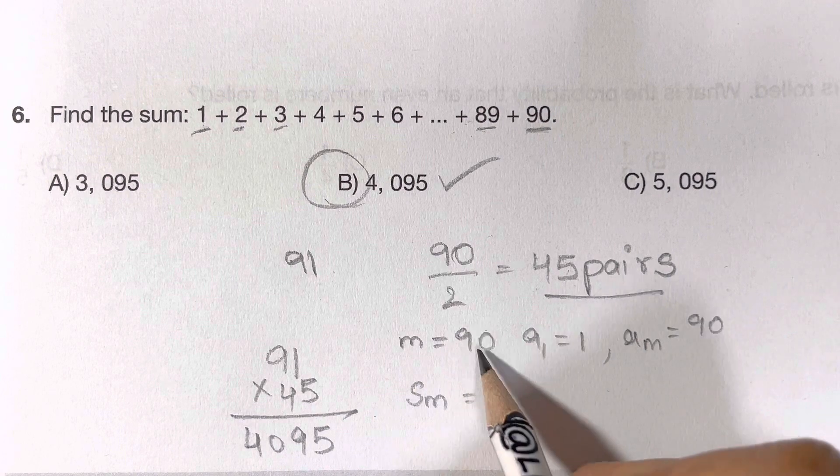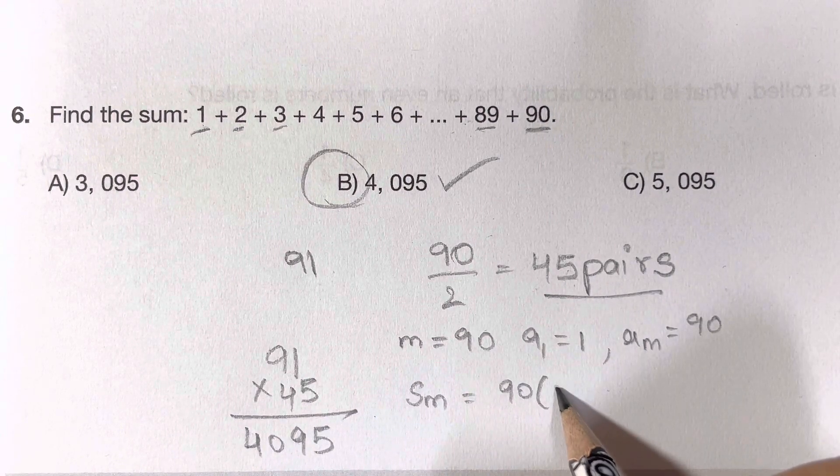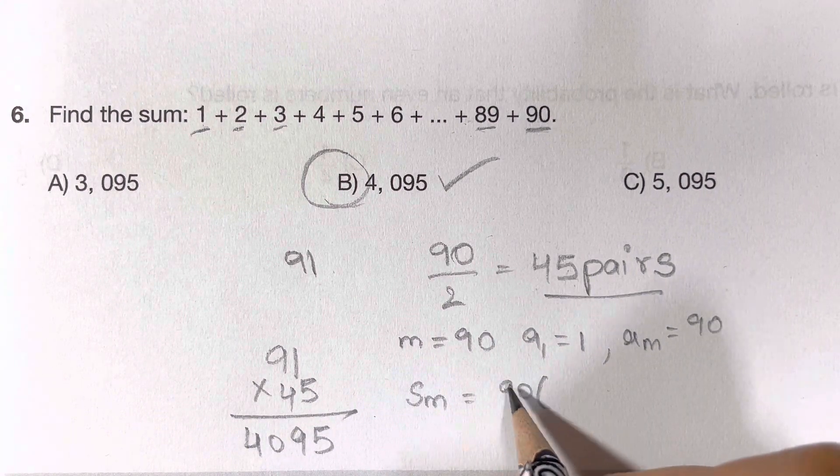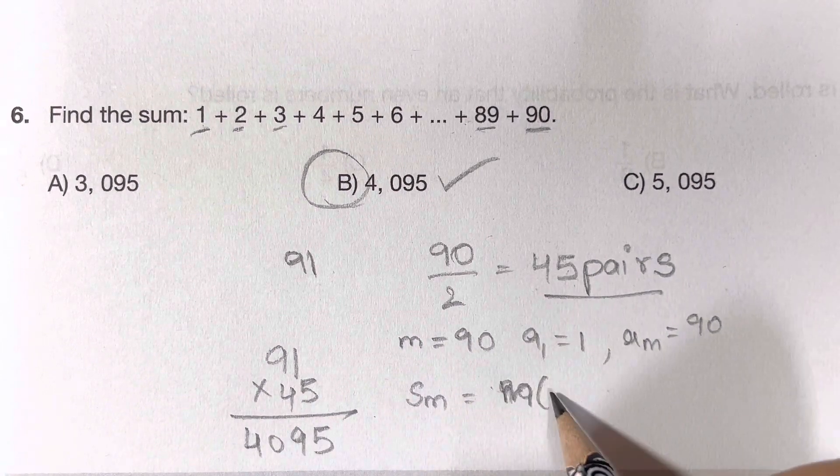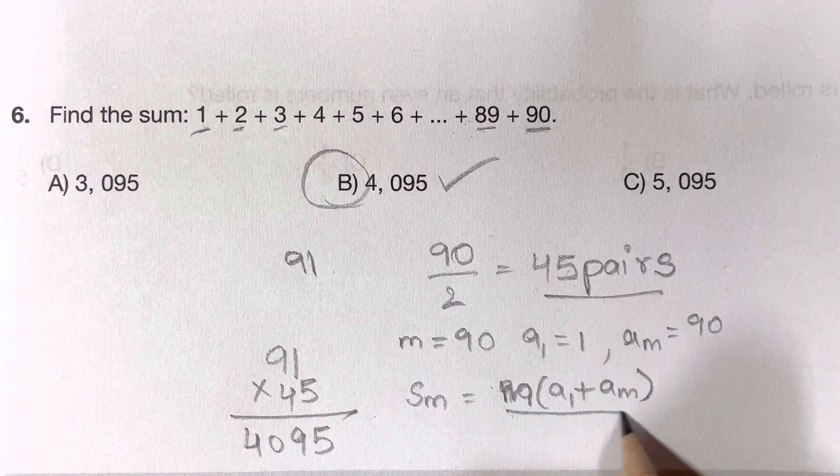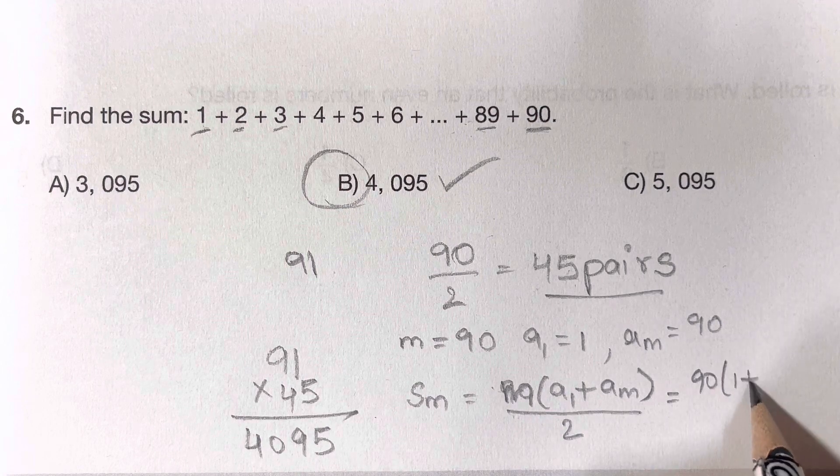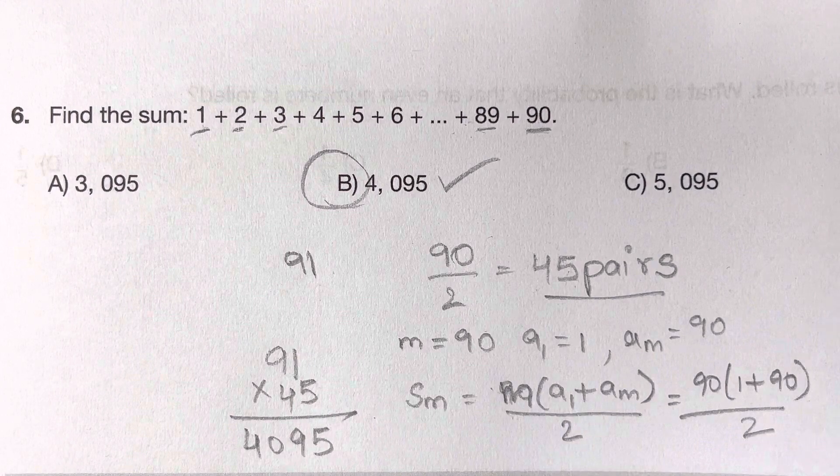Now the formula which you can have is sum of m numbers. I'm going to write the formula first. It is m into (a1 plus am) divided by 2. That's 90 times (1 plus 90) by 2. That's it.